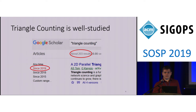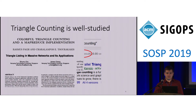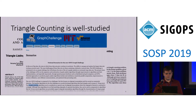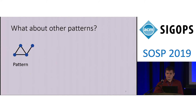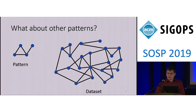Despite its simplicity, the ubiquity of triangle counting has led it to be a very well-studied problem in the literature. There are dozens of papers just optimizing its performance and hundreds using it as a primitive, as well as showing up as an optimization challenge. But the problem gets much harder as soon as we make the pattern just a tiny bit more complex. In this example, we've added just an edge and a vertex to this pattern, but that already serves to increase the complexity a lot.